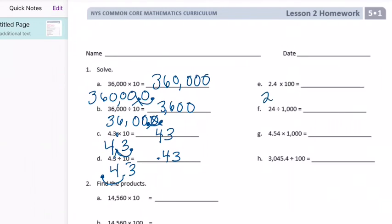Part E, 2.4, now we're times 100. We're going to move the decimal point two places. I'm going to add a zero there, and we get 240.